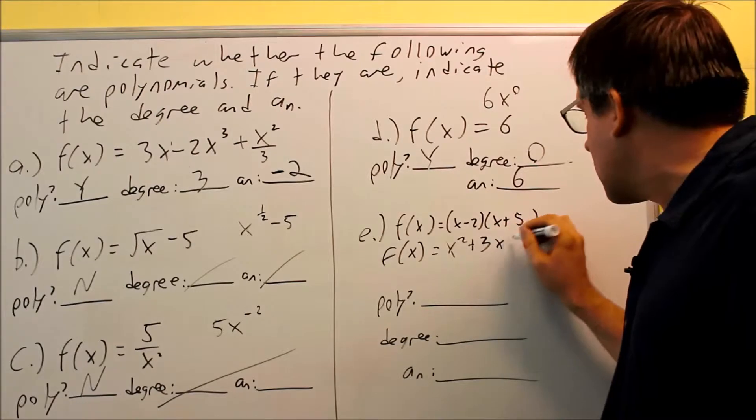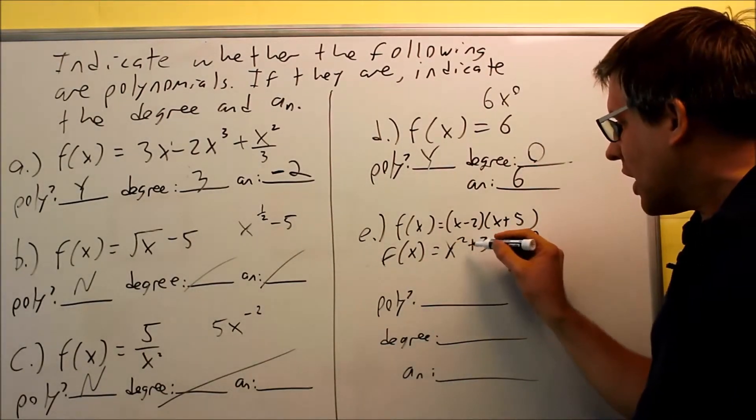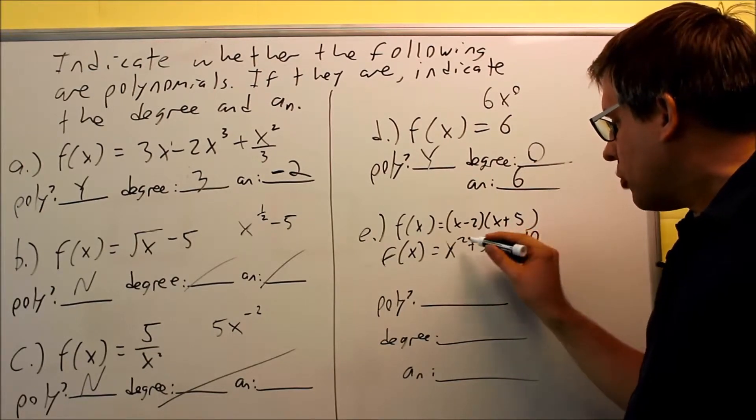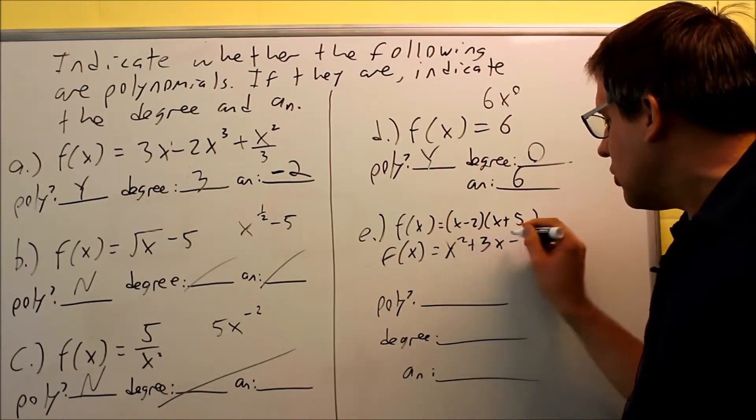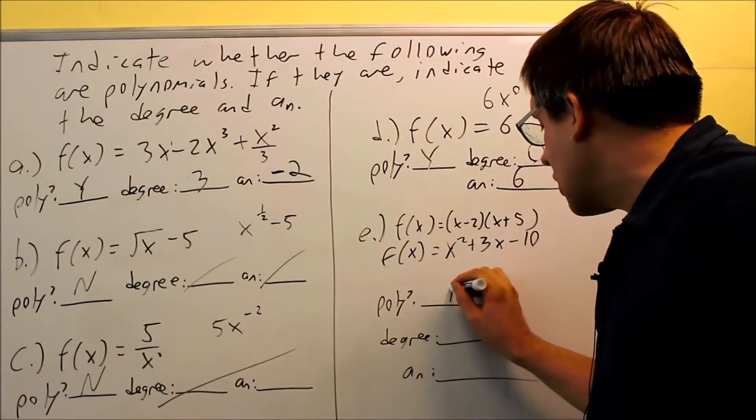So by multiplying out, we can see that we do have a polynomial because all the exponents, we have a 2 here, a 1, and there's no exponent in the 10 that's a power of 0. So this is going to be yes. That will be a polynomial.